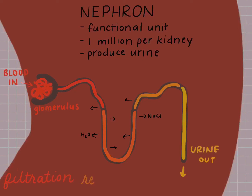There are terms for each of the functions that the nephron is responsible for. First is filtration of the blood. Second is reabsorption of the important molecules like water and electrolytes back to the rest of the body. And third is secretion — that's actually getting rid of the urine.